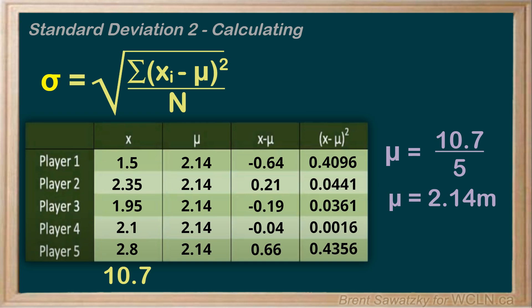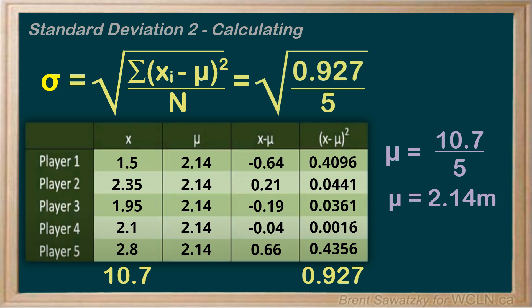We need the sum, so we add up all of the rows in the fourth column and get 0.927. This is our sum of squares that we plug right into our equation. With n equals 5, we calculate: 0.927 divided by 5 equals 0.1854, and then the square root of that gives us 0.431. The standard deviation has the same units as the data, so 0.431 meters. We have our standard deviation for this data.